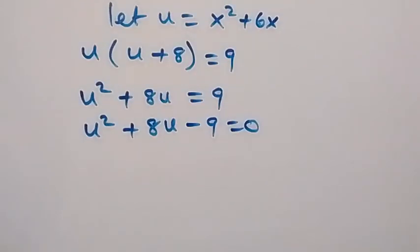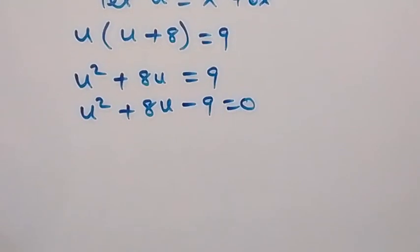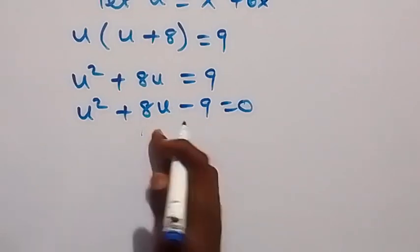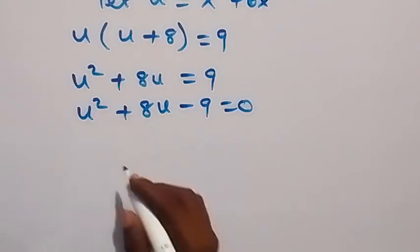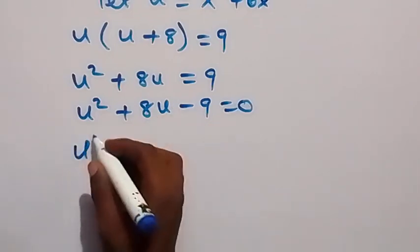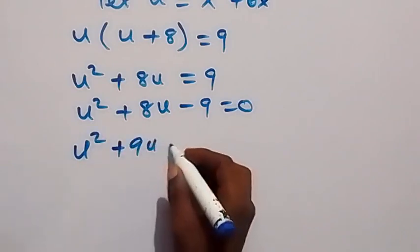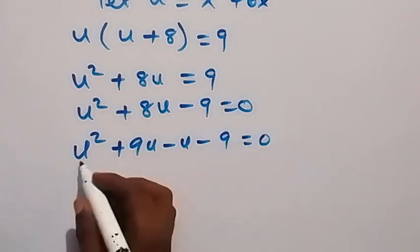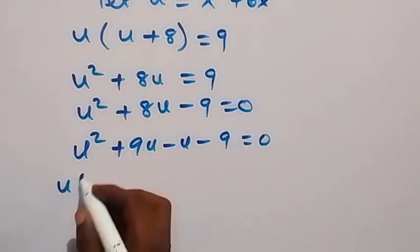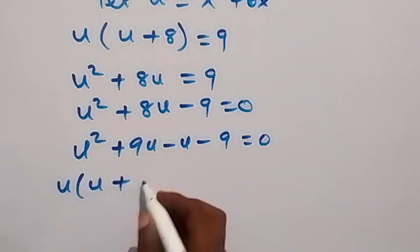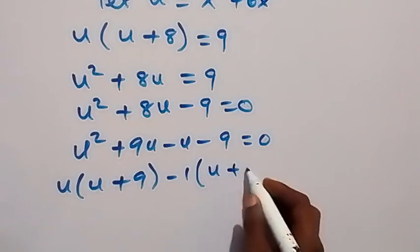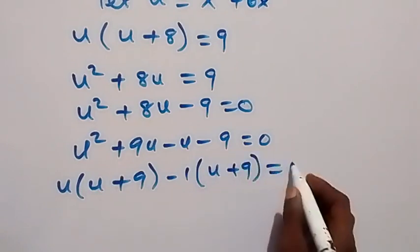Then here we can factorize this, and it will be plus 9u minus u, which gives us plus 8u. And when we multiply we have minus 9. So we have u squared plus 9u minus u minus 9, equals to 0. Then what is common between these two here: we have u, then u plus 9, then minus 1 common, we have u plus 9, then equals to 0.